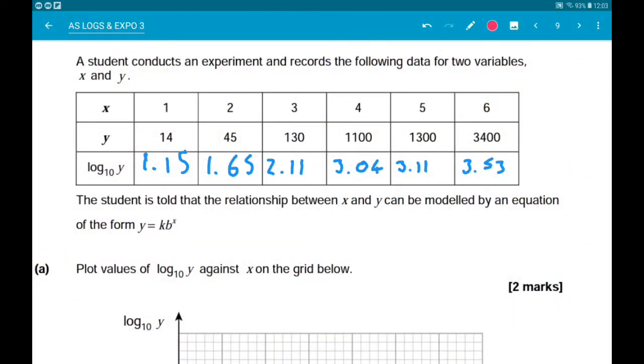Okay then, question 4. So a student conducts an experiment and records the following data for two variables x and y. The student is told that the relationship between x and y can be modeled by an equation of the form y equals kb to the power x.